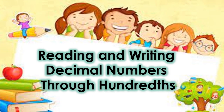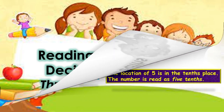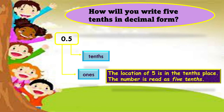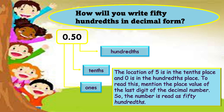And now, our lesson for today. 5 is in the tenths place and 0 is in the hundredths place. To read this, mention the place value of the last digit of the decimal number. So the number is read as 50 hundredths.